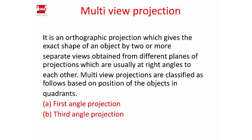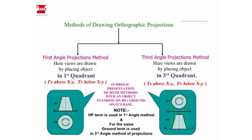Multi-view projection is a type of orthographic projection. Multi-view projection has two classifications: first angle projection and third angle projection. In first angle projection, the object is placed in the first corner. In third angle projection, the object is placed in the third corner.